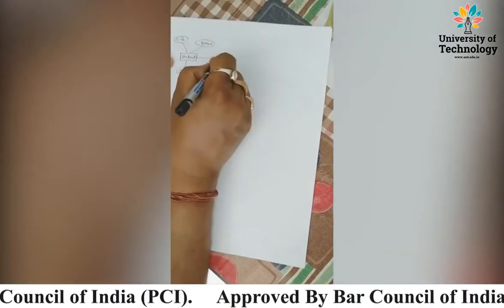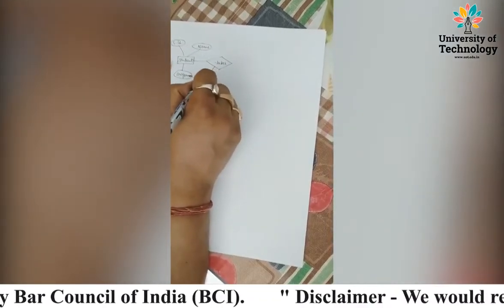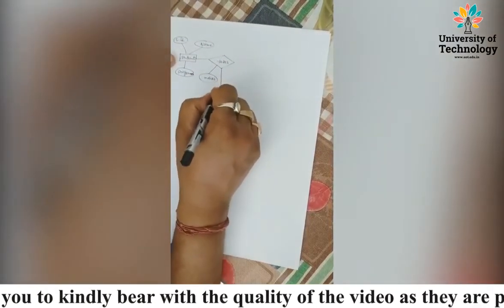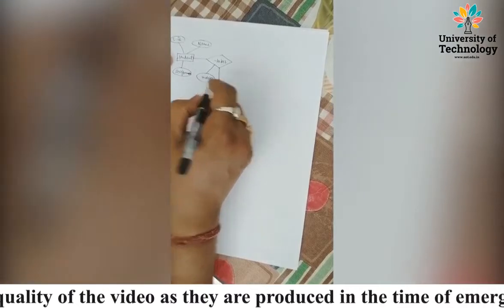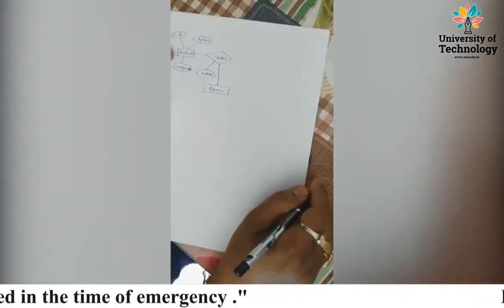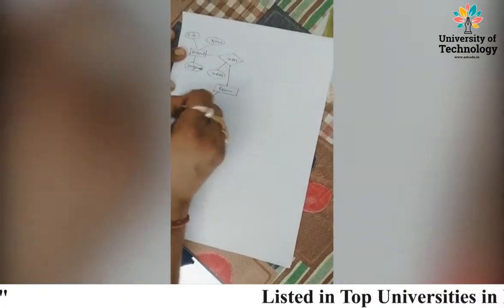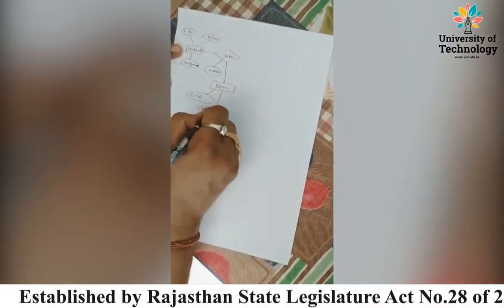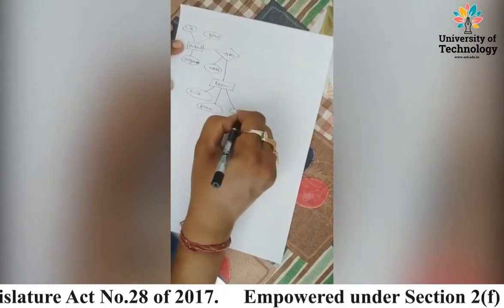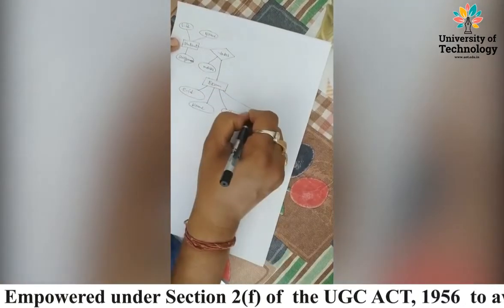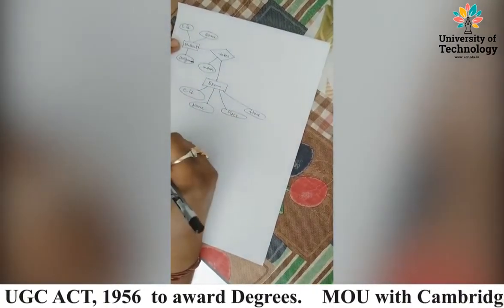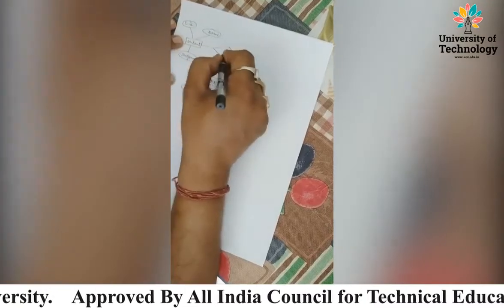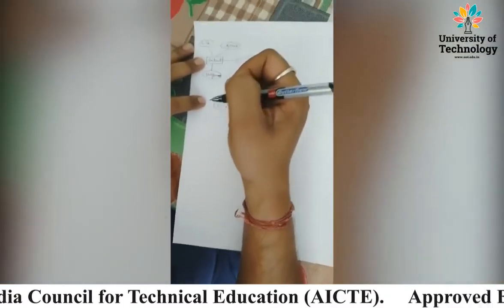The relationship is 'takes' — student takes exam. The relationship has an attribute which is marks. The student will get marks through the exam. Exam is another entity. The attributes of Exam are: e_id (exam ID), exam name, place (where you gave the exam), and date/time. Whatever attributes you have noted are related to the entity Exam. So the student takes exam and gets marks.